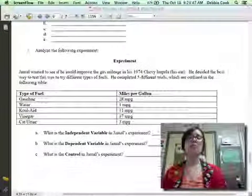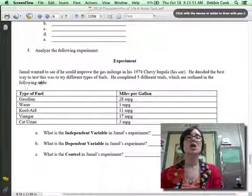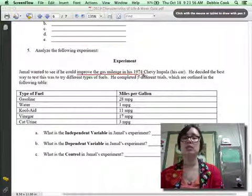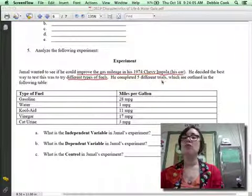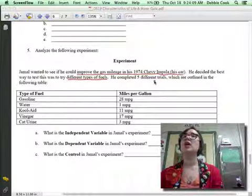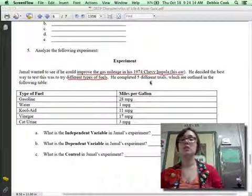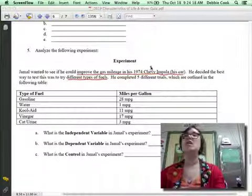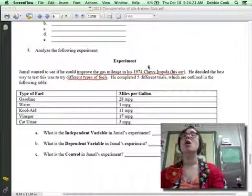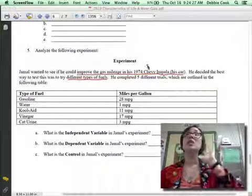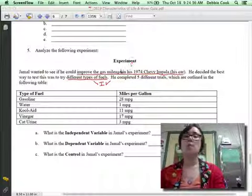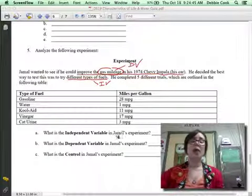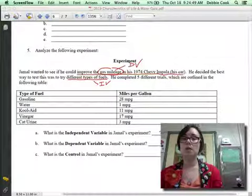Let's look at number five. For number five, you had to analyze an experiment. So it says, Jamal wanted to see if he could improve the gas mileage in his 1974 Chevy Impala. He decided the best way to test this was to try different types of fuels. He completed five different trials, which are outlined in the following table. Where can we usually find the IV and the DV? In the very beginning, the first two sentences. And if you look, we only have three. So let's see if we can figure out the IV. The IV is what? I change. So if I'm Jamal, what am I changing? The type of fuel. So this is going to be my IV. If I'm Jamal, what am I measuring? Yeah, miles per gallon or gas mileage. This is going to be my DV. So let's go ahead and look for A. What is the independent variable in Jamal's experiment? You already told me. It's going to be the type of fuel. Perfect.